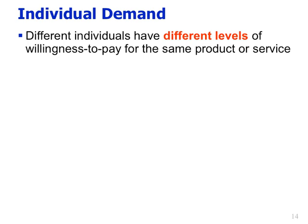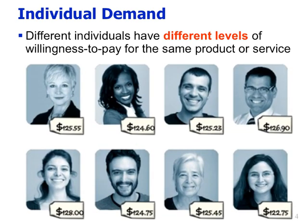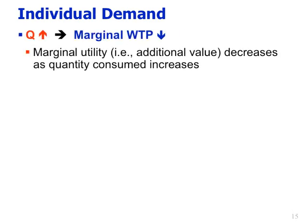Different individuals have different levels of willingness to pay for the same product or service. While the price might be the same for everyone, their willingness to pay is presumably quite different. An important feature of willingness to pay is that as the quantity consumed goes up, your marginal willingness to pay goes down — the additional value you get from more units decreases as the quantity consumed increases.